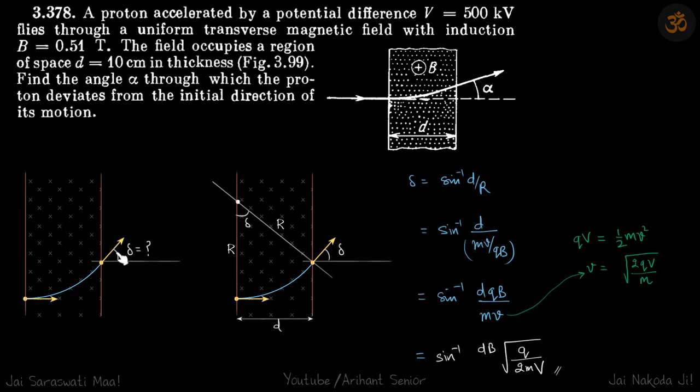So initially it was going horizontal. So whatever angle the velocity makes with the horizontal will be the angle of deviation.